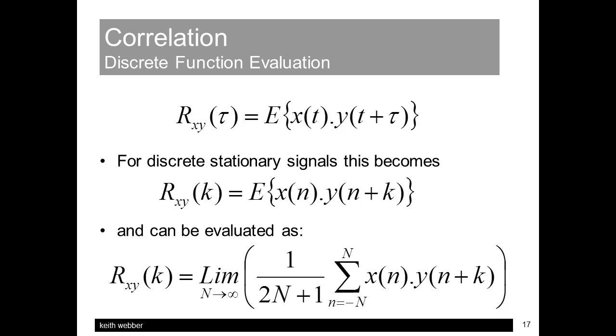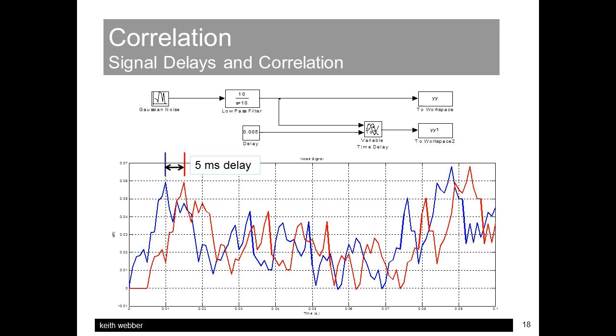This multiplication and summation calculation is then repeated for every value of the k time steps, over which we'll plot the correlation function, to represent the process of sliding the one trace over the other and seeing how well they fit at each step.